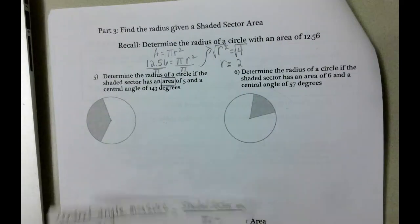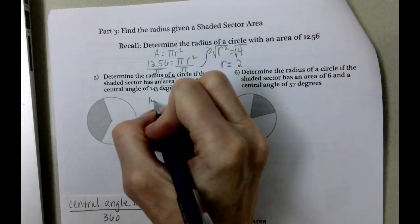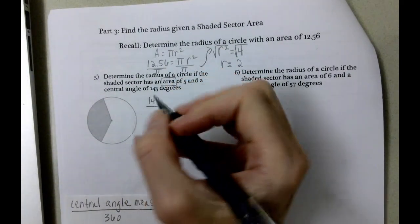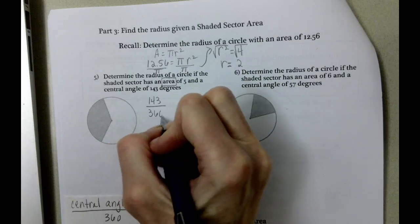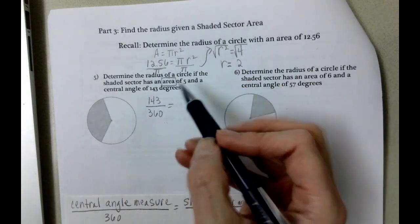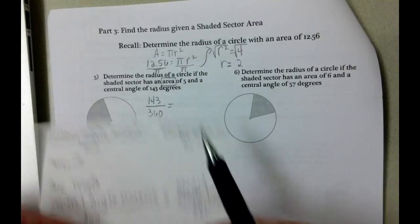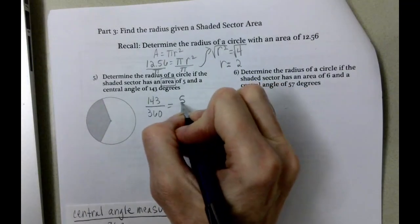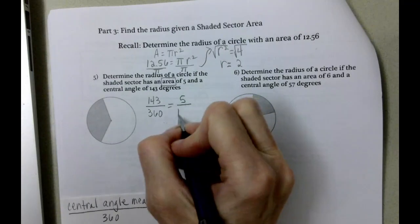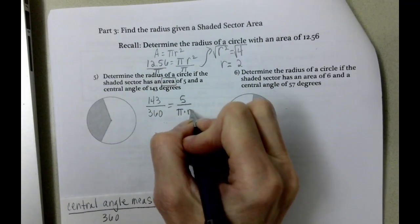So when we set this up, our central angle divided by 360. But this time what we're given is the shaded sector area is 5. And then this is pi times radius squared.